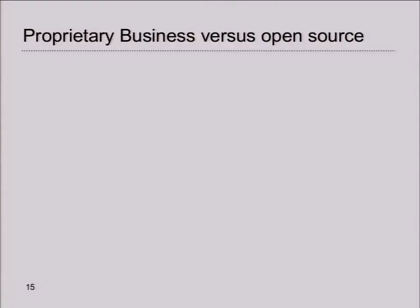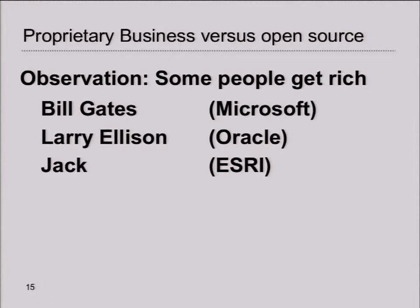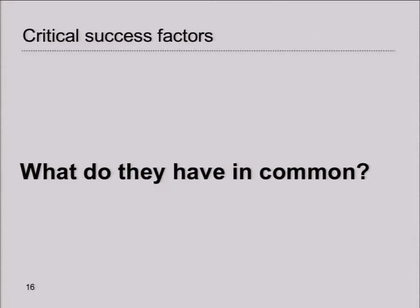So having said that, we can start with the real topic of this presentation. And there I have an observation: some people get rich. Some examples — you have Bill Gates, Larry Ellison, Jack Dangermond. Other people were rich, like Steve Jobs. Come back to that later.